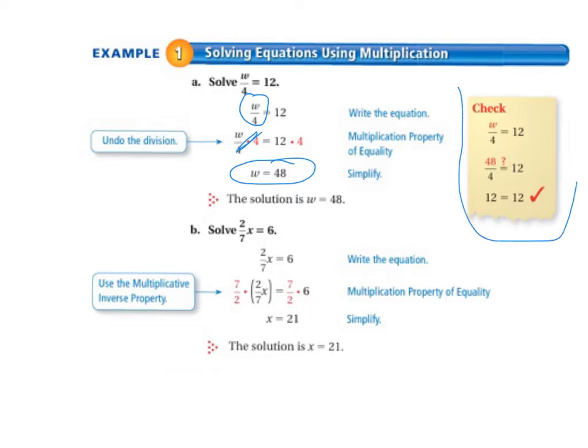We check our answer. Always remember to do the check step so that you get 100% on everything. And we fill in 48 for the W back into our original equation. So we have 48 divided by 4. Is 48 divided by 4, 12? Well, yes it is. So 12 equals 12. Our equation is true. So we got it right. We can move on.